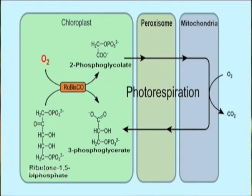This process reduces the efficiency of photosynthesis, potentially reducing photosynthetic output by 25% in C3 plants. Photorespiration involves a complex network of enzymatic reactions that exchange metabolites between chloroplasts, leaf peroxisomes, and mitochondria.